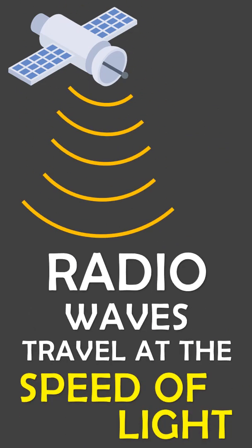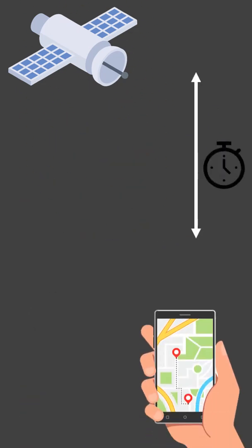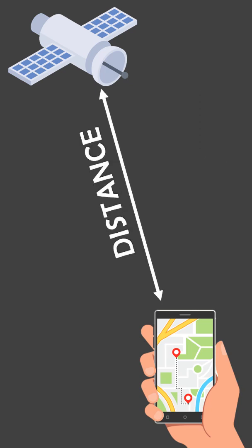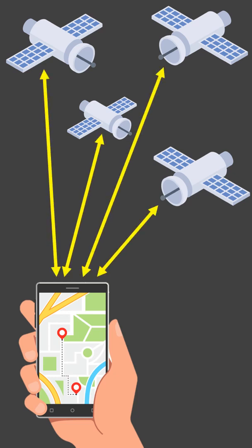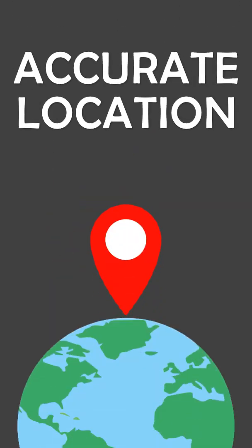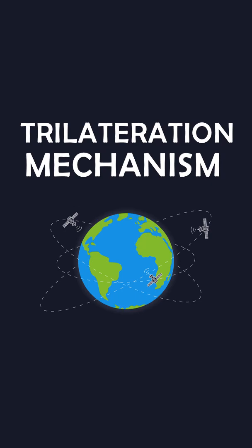These radio waves travel at the speed of light. The receiver takes the time it took for the signal to travel from space to Earth to calculate how far it is. When this receiver finds out how far it is from four or more satellites, you can tell exactly where it is. This is done using the trilateration mechanism.